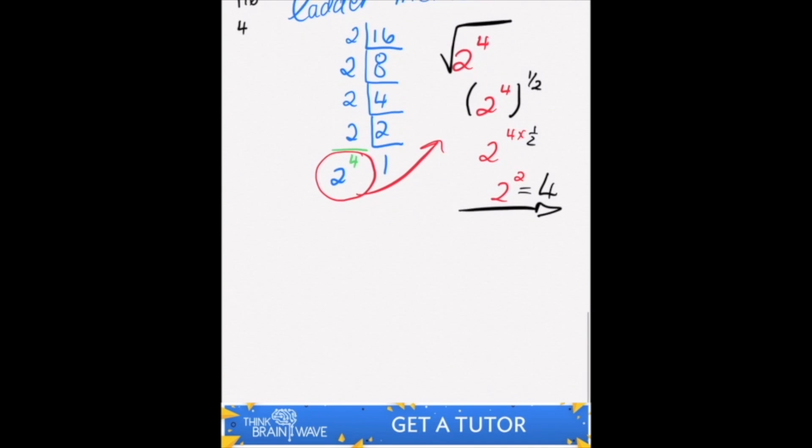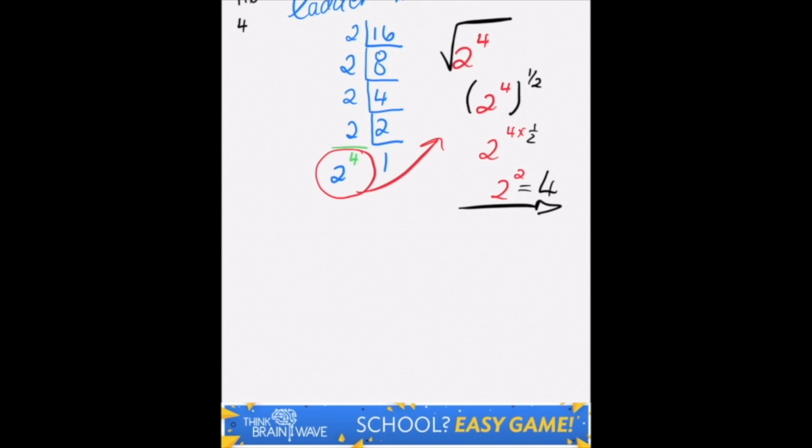Now let's move on and try and solve 26. So let's try the ladder method with 26. You take 2 again. So 26 divided by 2 you get 13. 13 divided by 2 doesn't work so you use 13 as it's the only prime number that goes into 13.